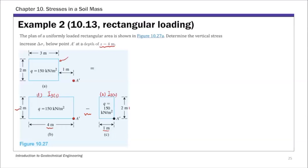The increase of vertical stress at point A prime is basically the increase due to the large rectangle — sigma Z1 — minus that additional smaller area we added on. That's how you get the stress increase due to the original 2 by 3 rectangle. So that's our strategy.